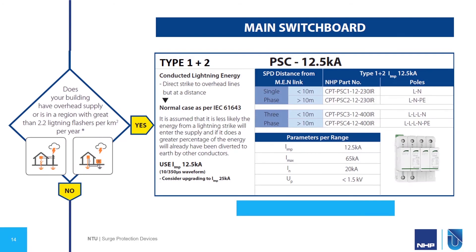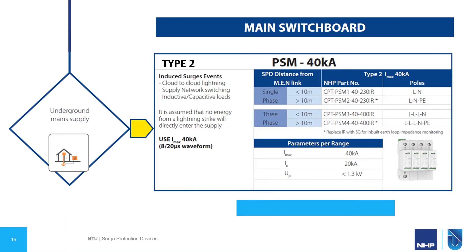It's worth noting that there's no problem with upgrading to the 25 kA unit, which may be relevant if you've got a particularly sensitive, vulnerable, or expensive installation. If that's not the case, then it's assumed that no energy from a lightning strike will directly enter your supply, and therefore you can go straight to a Type 2 device. Here, NHP has the PSM 40 kA range. There is no IIMP for this device because it's a pure Type 2. It has an IMAX of 40 kA, a nominal current of 20 kA, and a protection level of less than 1.3 kV.